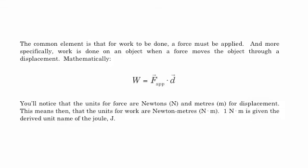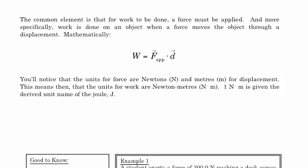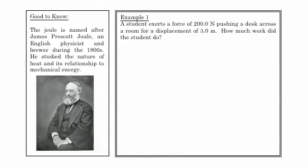Mathematically, work equals the applied force times the distance or displacement. The units for force are newtons and for displacement we have meters, so the units for work are newton meters. We have a derived SI unit: one newton meter is called a joule. That is the SI unit for energy, so instead of writing newton meters we can write joules. The joule was named after James Prescott Joule, an English physicist and brewer during the 1800s who studied heat and its relationship to mechanical energy.